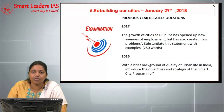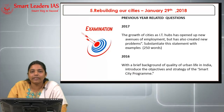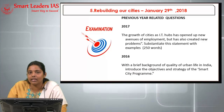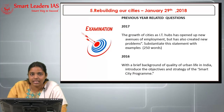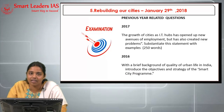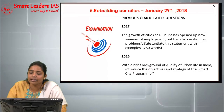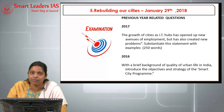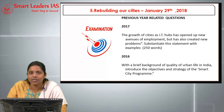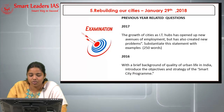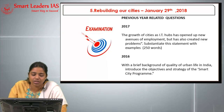Related previous year questions: in 2017, a question addressed how IT hub cities create new employment avenues for educated migrants but also create new problems, asking to substantiate with examples. In 2016, a question asked for the objectives and strategies of the Smart City program with a brief background of quality of urban life in India.